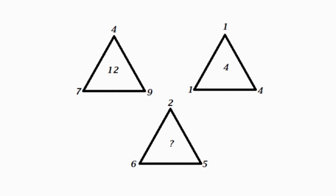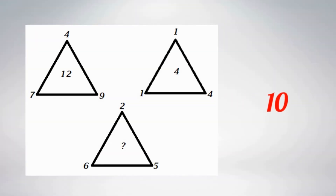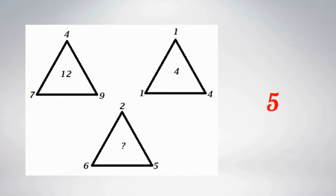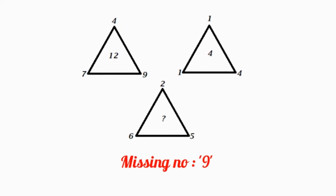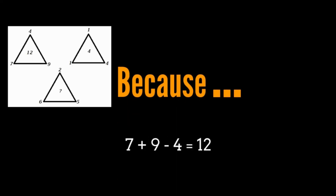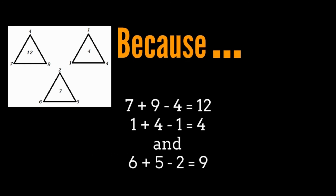Now solve this tough one. Find the missing number in this pattern. Let's get started. The missing number is 9. Because the pattern formed here is: 7 plus 9 minus 4 is 12, 1 plus 4 minus 1 is 4, and 6 plus 5 minus 2 is 9.